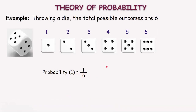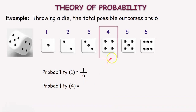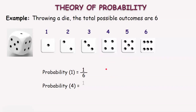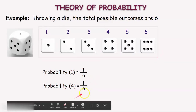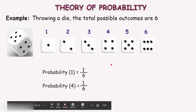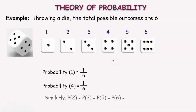Let us calculate the probability of getting 4. Here also, there is only one way to get 4 on the die. Therefore, the favorable outcome is 1 divided by the total possible outcomes 6. So, P(4) is equal to 1 by 6. Similarly, P(2) = P(3) = P(5) = P(6), and all are equal to 1 by 6.